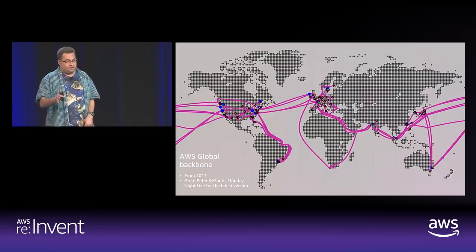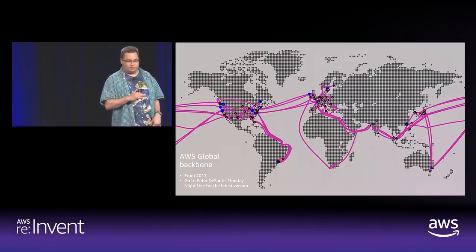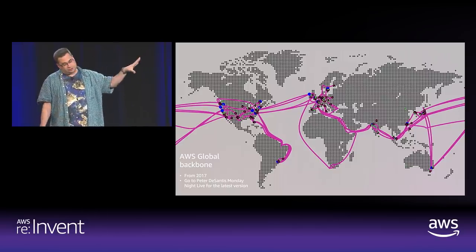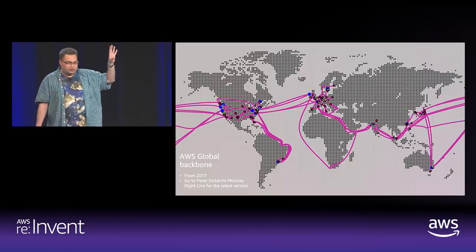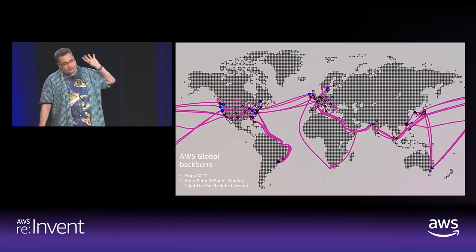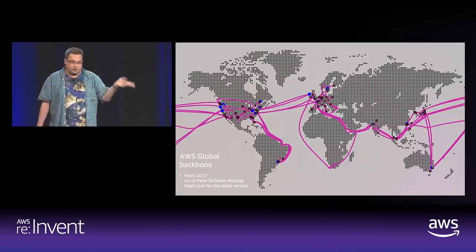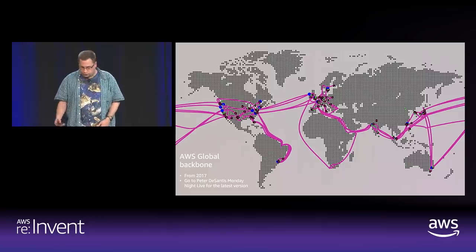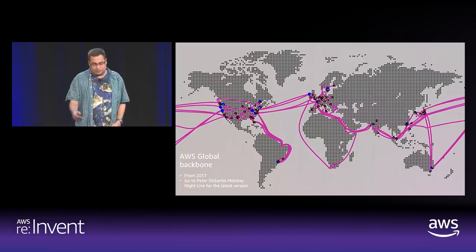This is a picture of the ADOS global backbone from 2017 — Peter DeSantis' re:Invent Tuesday Night Live presentation. He's doing a Monday Night Live presentation tonight with an updated version of the backbone, so you can see how the topology has changed. To give you an idea, this is all-around-the-globe connectivity with 100 gig for all backbone circuits. It's something we're definitely proud of.